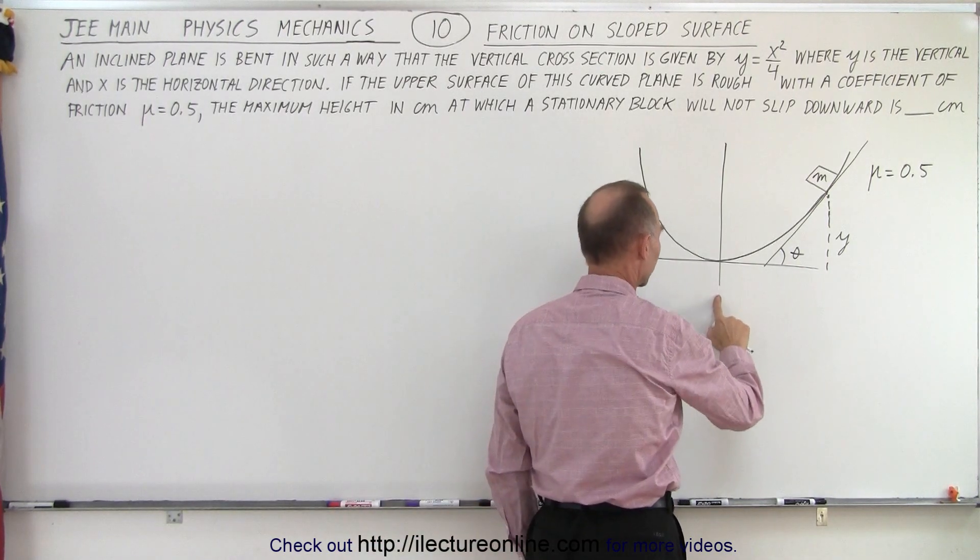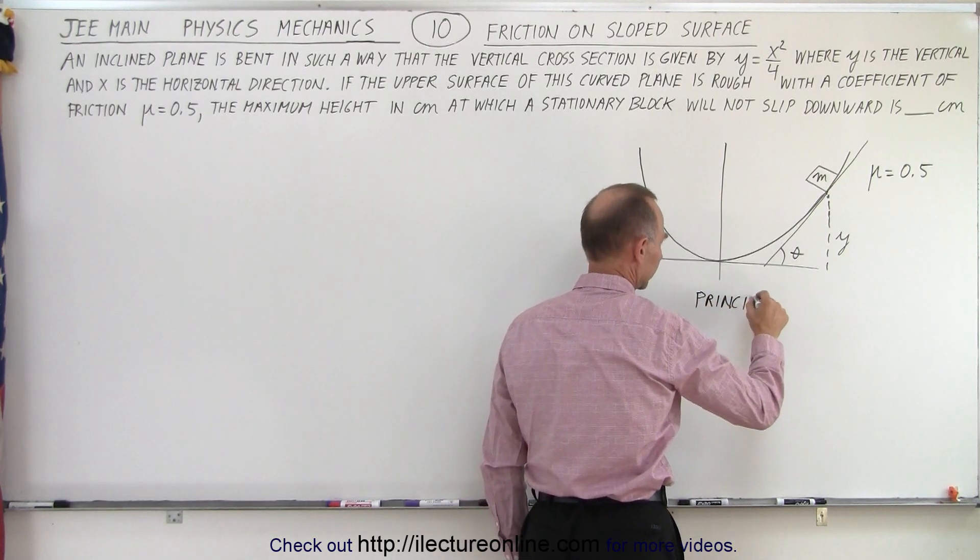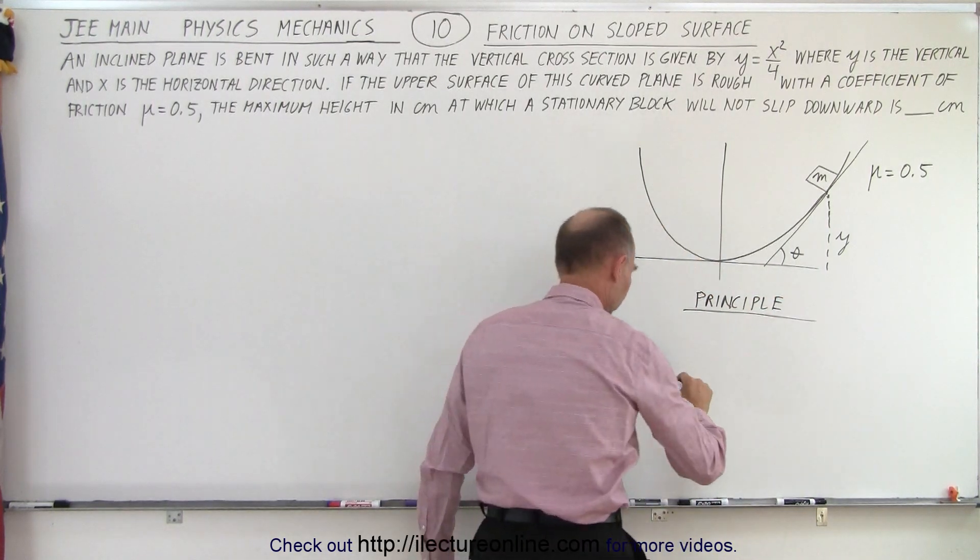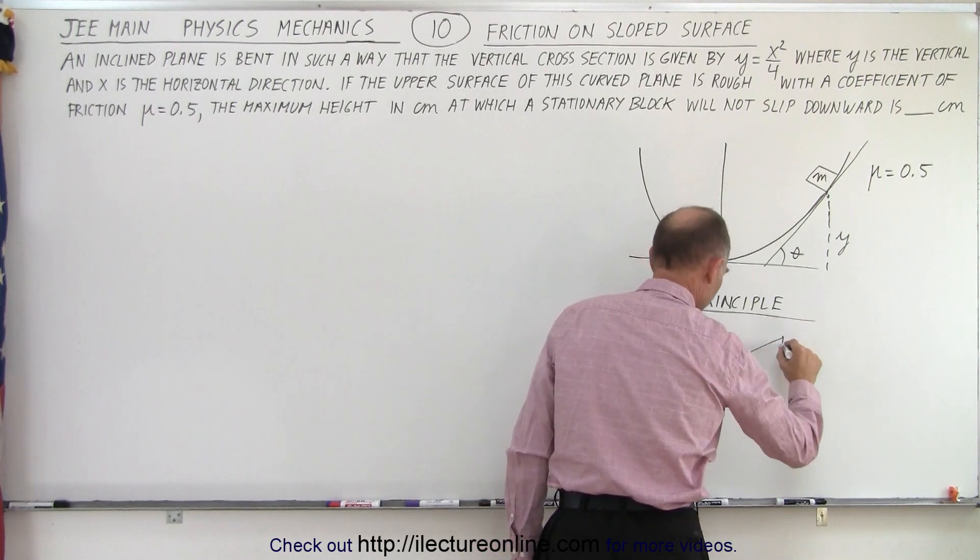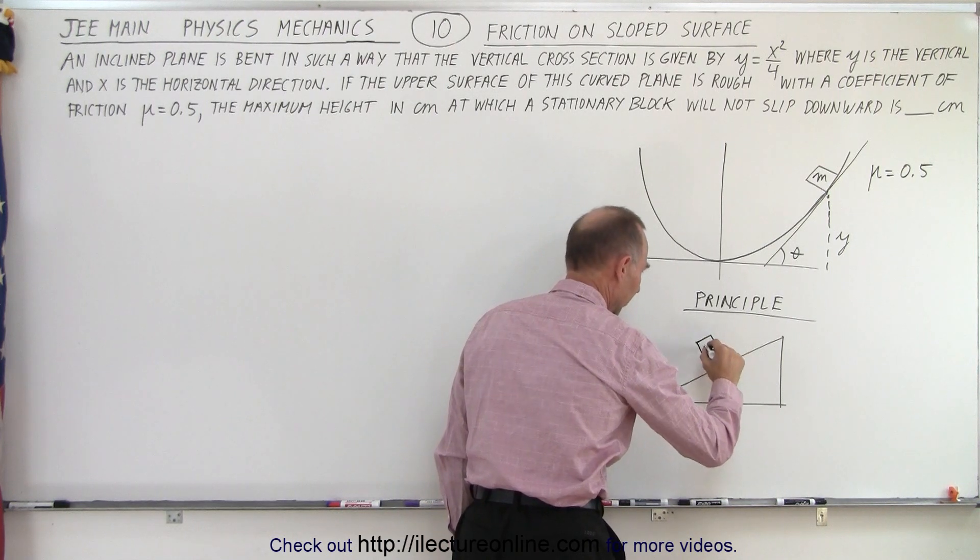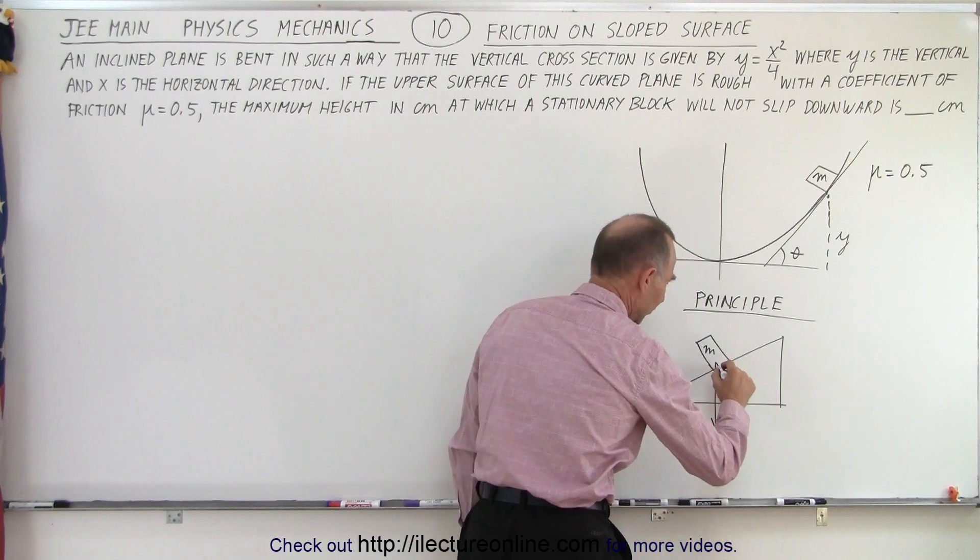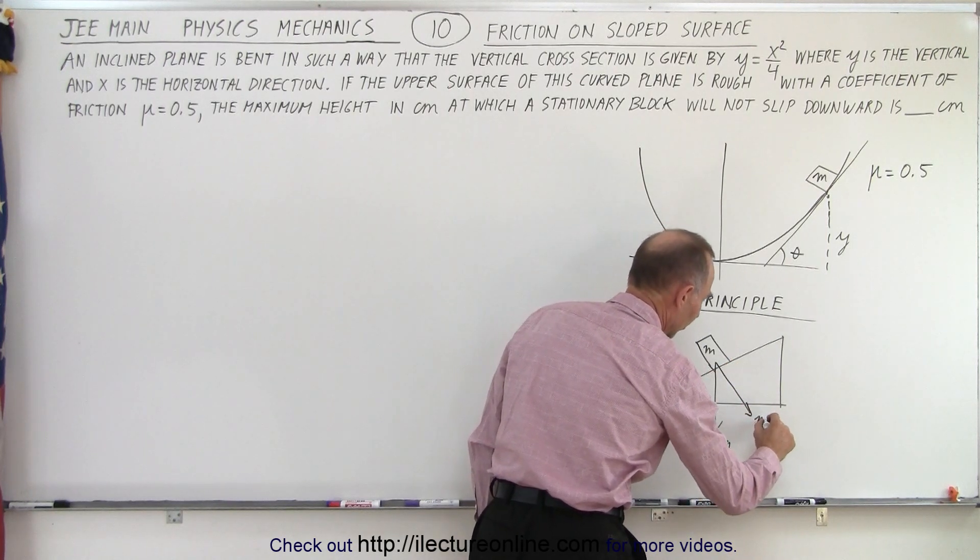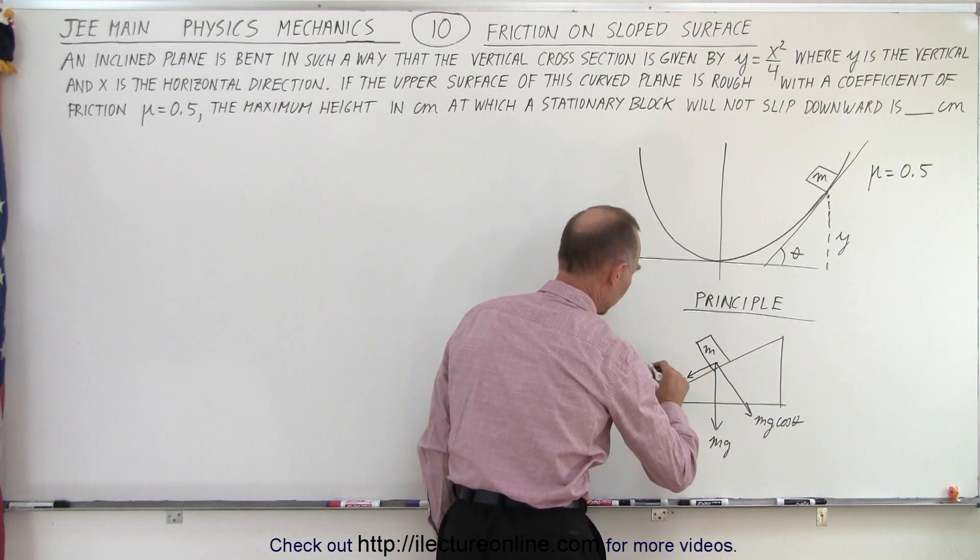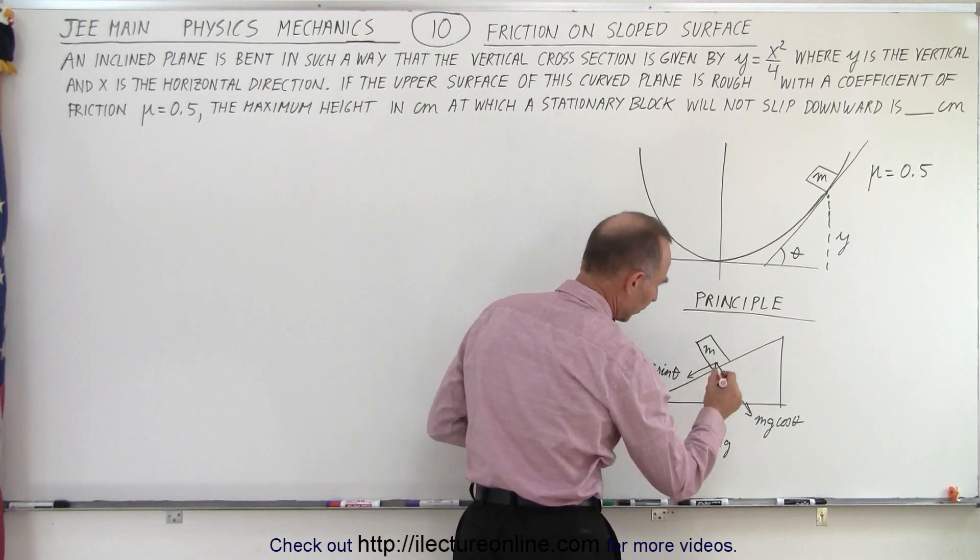How do we do that? What's the principle here? Well, the principle is as follows. Let's go to a straight sloped surface like this and let's put a mass on there. There we go, there's our mass m. So we have the mg straight down, we have the perpendicular component which is mg cosine of theta, we have the horizontal component which is mg sine of theta.